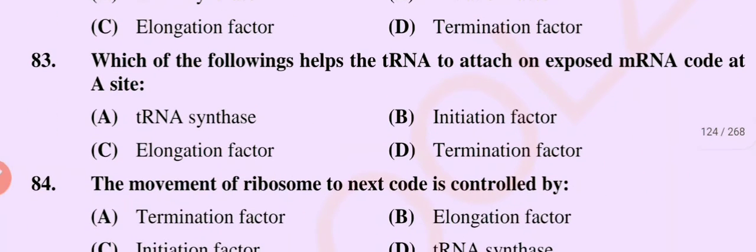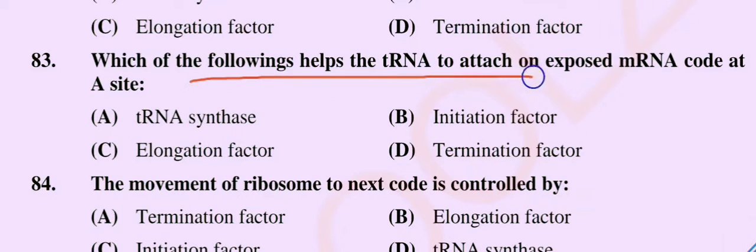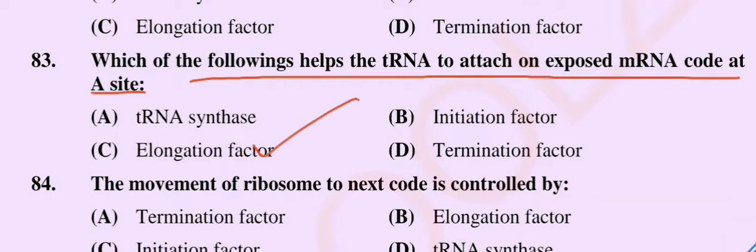Question number 83. Which of the following helps the transfer RNA to attach to an exposed messenger RNA code at a site? Option A, transfer RNA synthase; option B, initiation factor; option C, elongation factor; option D, termination factor. The correct option is option C, elongation factor.